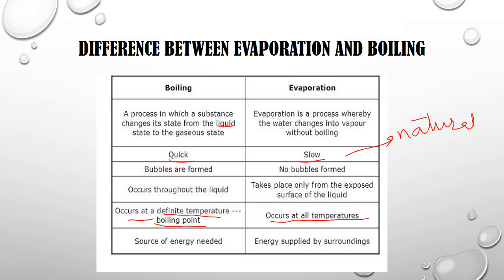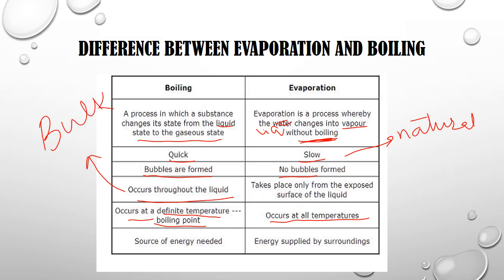Boiling is the change of liquid state to gaseous state. Evaporation is also the change of liquid into vapor state, but without boiling — before the liquid reaches its boiling point. During boiling, bubbles are formed, whereas during evaporation no bubbles are formed. Boiling occurs throughout the liquid, so we call it a bulk phenomenon, whereas evaporation takes place only at the exposed surface — it is a surface phenomenon.